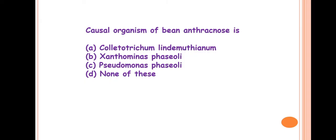First question is: Causal organism of bean anthracnose is? So the answer is A, Colletotrichum lindemuthianum. This is a very important disease of bean. The main characteristic symptom of anthracnose disease is development of black sunken lesions. If you see sunken lesions in the fruit, that is anthracnose. That is the characteristic symptom of anthracnose disease. Here also in bean, black sunken lesions are formed, and this is the causal organism, Colletotrichum lindemuthianum.